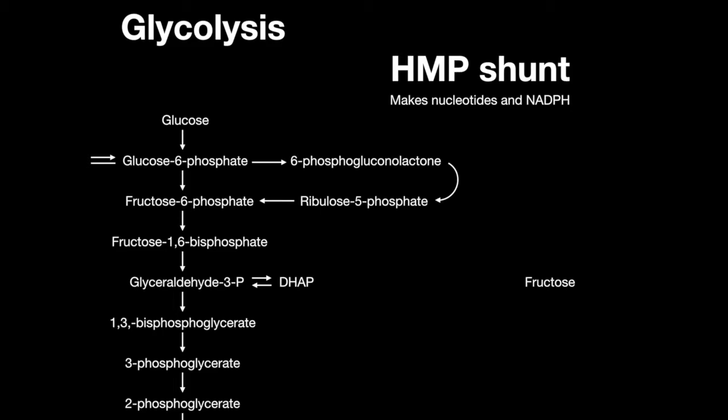Fructose tastes sweeter than glucose because it enters glycolysis further downstream in the pathway. It is phosphorylated and split into two molecules which enter as dihydroxyacetone phosphate and glyceraldehyde-3-phosphate intermediates.